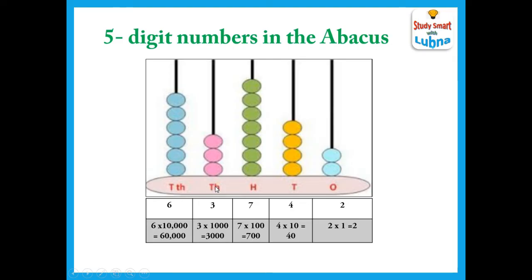In thousands we are having 3 beads, so its place value is 3,000. And in ten thousands we are having 6 beads, so its value is 60,000. So the digits are 2, 4, 7, 3 and 6 and their place values are 2, 40, 700, 3,000 and 60,000.